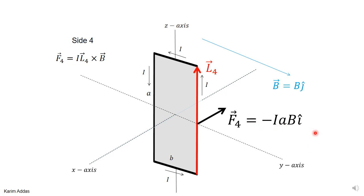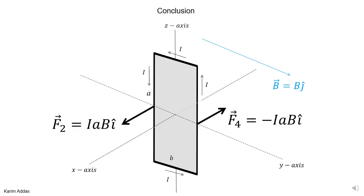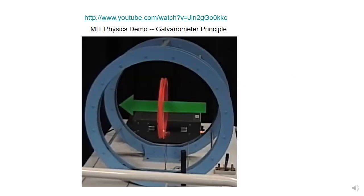Summarizing all four forces: there is no force on the top part, no force on the bottom part, the left side experiences a force in the plus I direction, and the right side experiences a force in the minus I direction. When this loop is placed in this magnetic field, it will start to rotate.